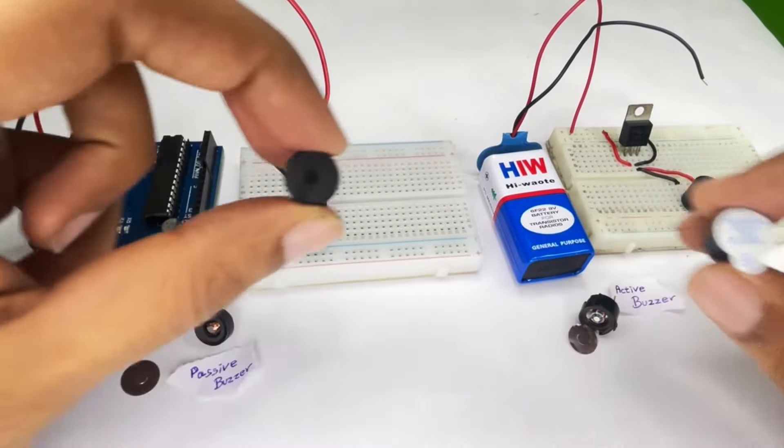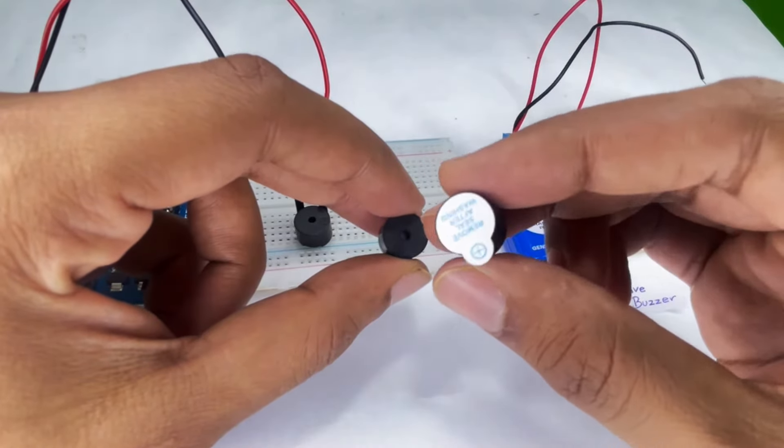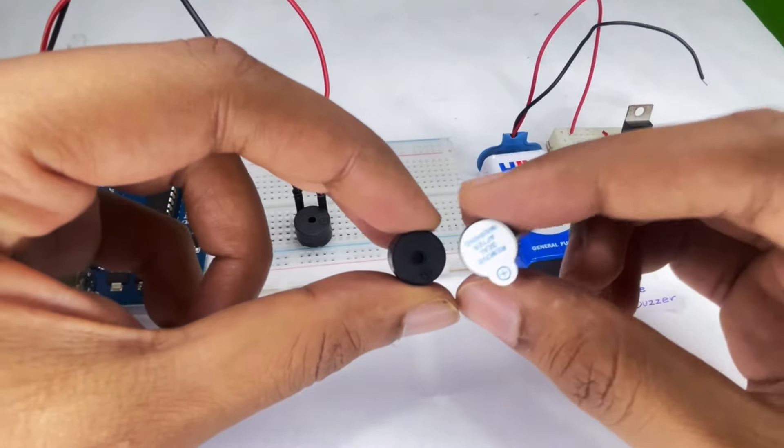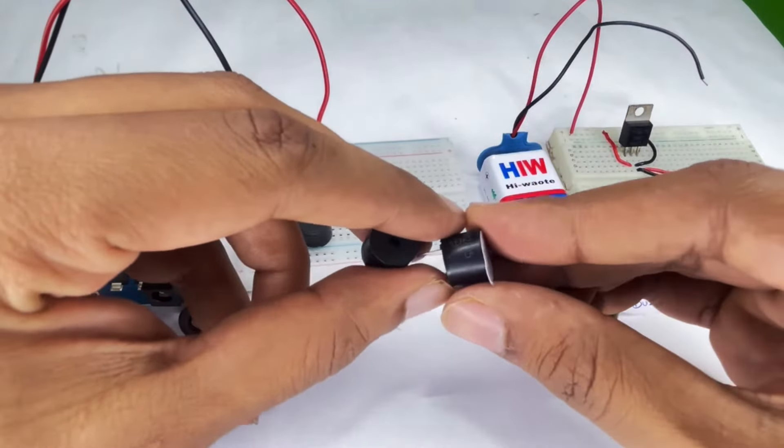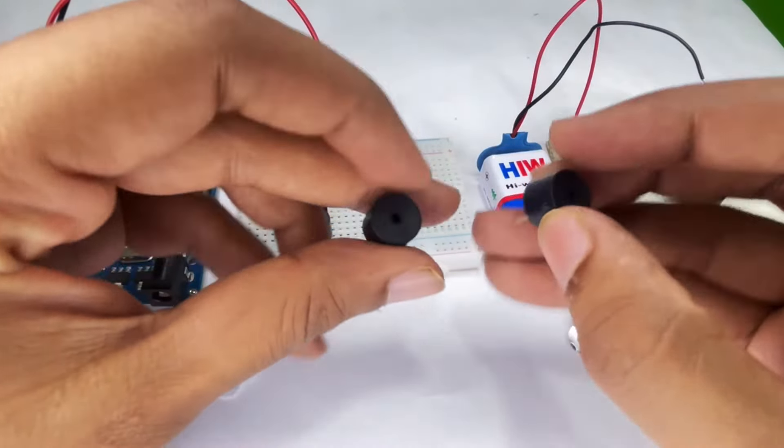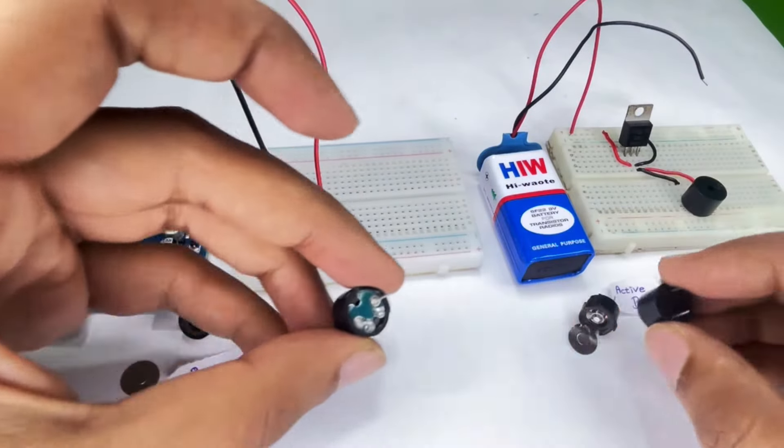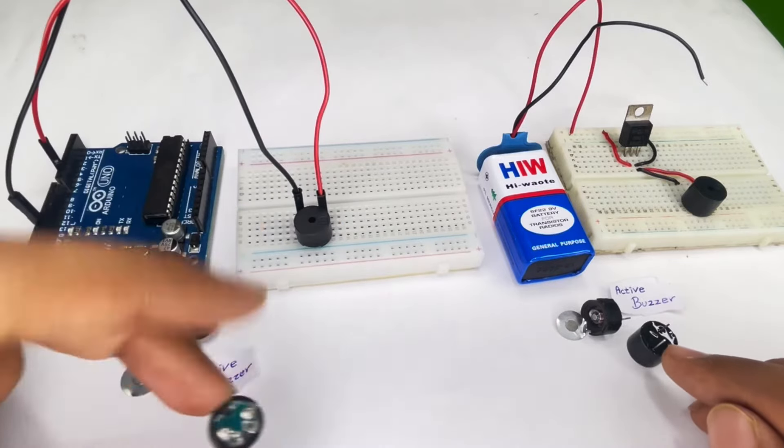First let's start with the physical appearance. As you can see, this here is an active buzzer and this here is a passive buzzer. Active buzzers normally get shipped with a sticker on top, but if this sticker is removed, we can still identify an active buzzer and a passive buzzer by just looking at the back side. Active buzzers will always have a plain finish on the back side, and passive buzzers will have some kind of a PCB finish on the back side.